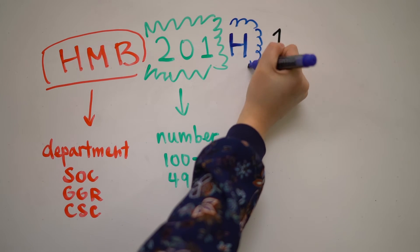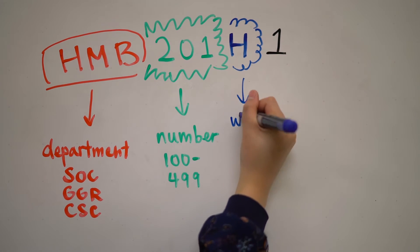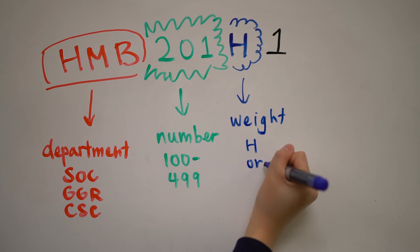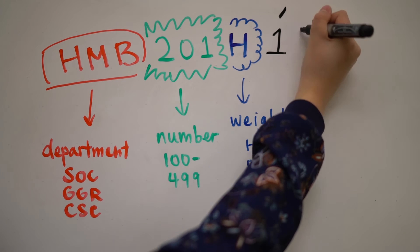Y and H indicate the course weight. Y is a full year course and H is a half year course. Completing a full year course counts as one full course equivalent, or FCE, and a half year course counts as half an FCE.